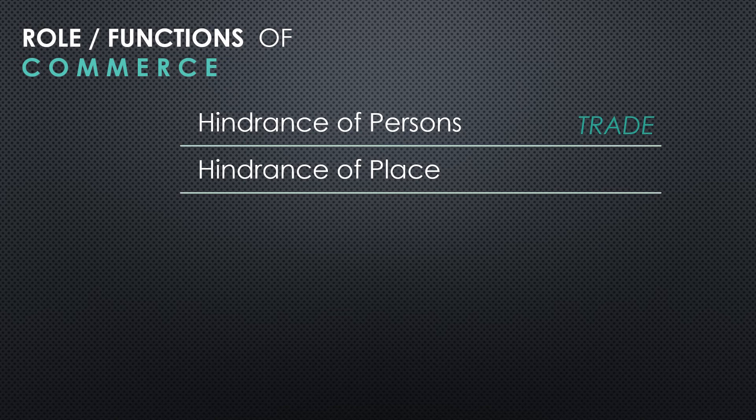The next hindrance is the hindrance of place. Goods are produced at one place whereas consumers are at different places — it may be different places within a country or different places across the globe. There is a place gap between producers and consumers. Transport is that segment of commerce which helps in removing this hindrance of place.